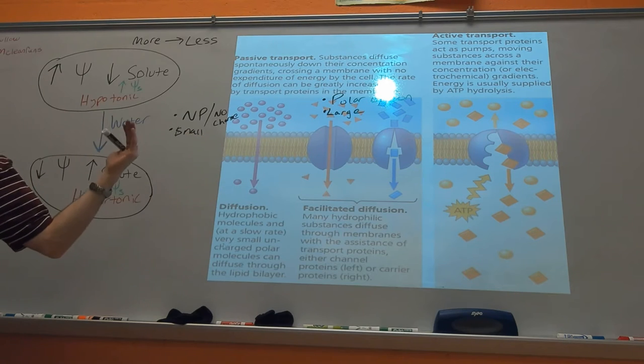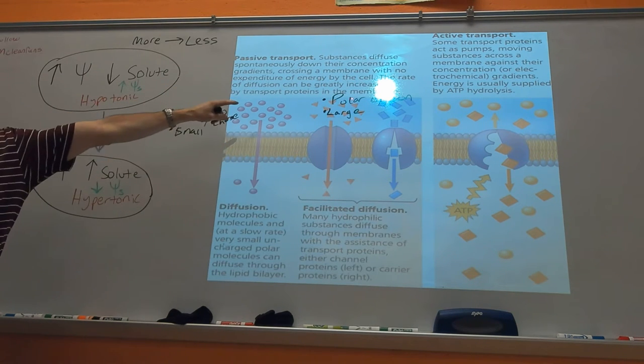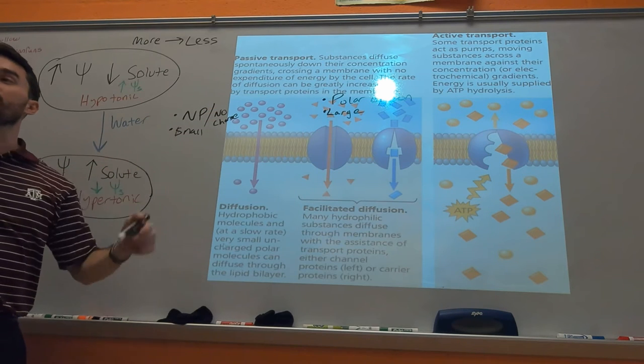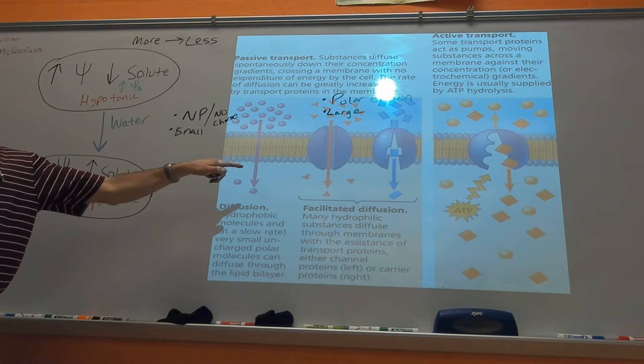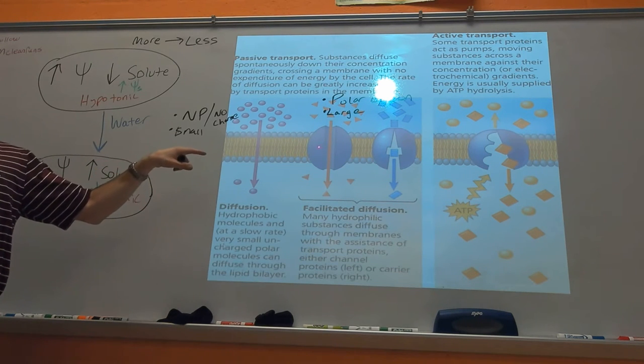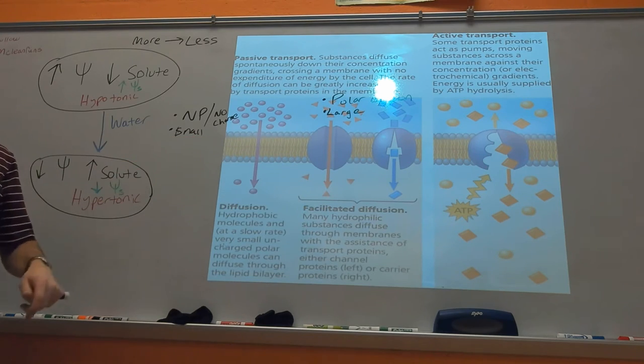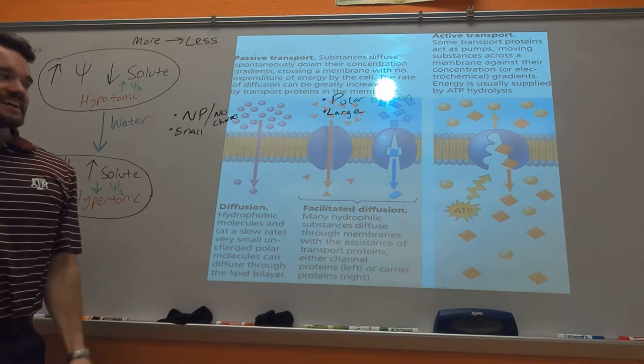So the aquaporin is the classic example. Water is polar. Water is small, but because it's polar, it can't come through the cell membrane very quickly, so we assist it, we facilitate its diffusion with a protein. This one is a channel protein, the one that, it reminds me of like a little clip, that's a carrier protein.